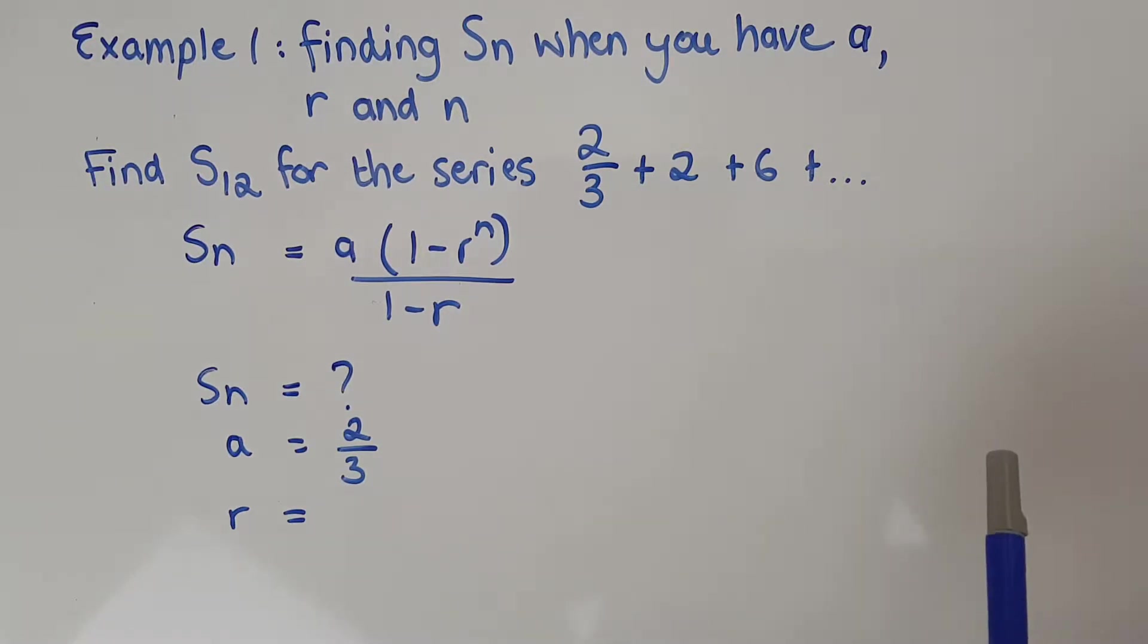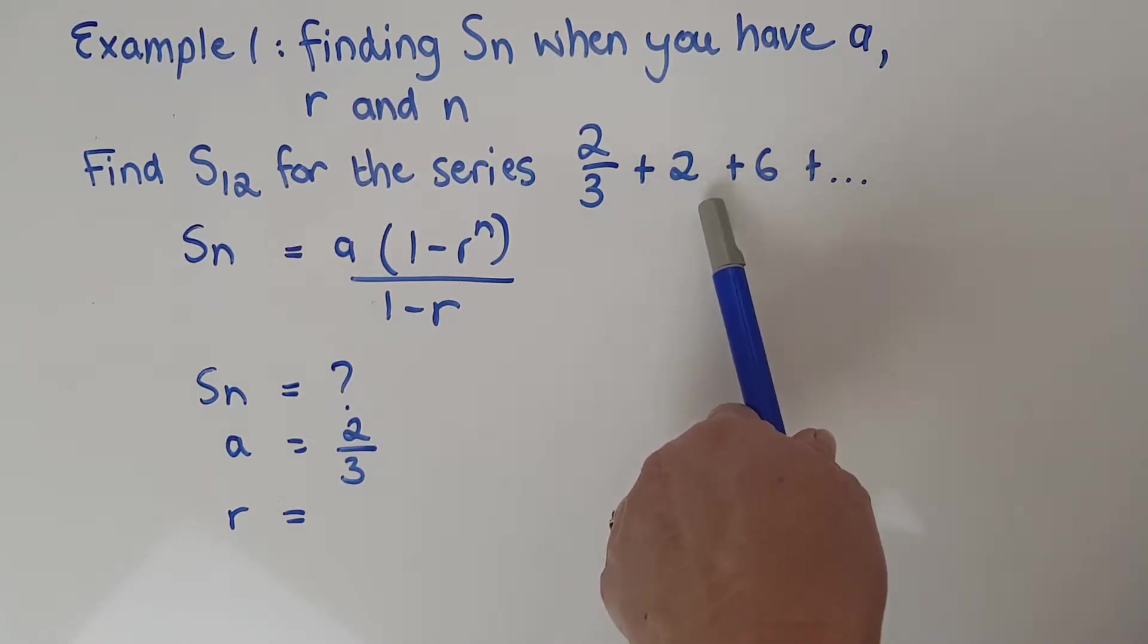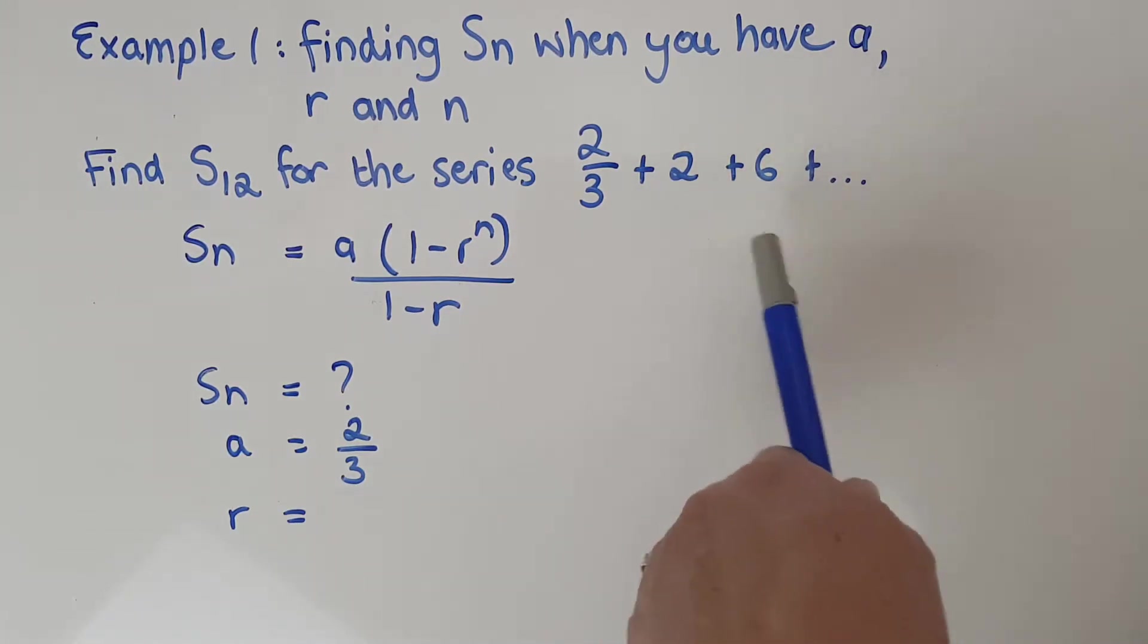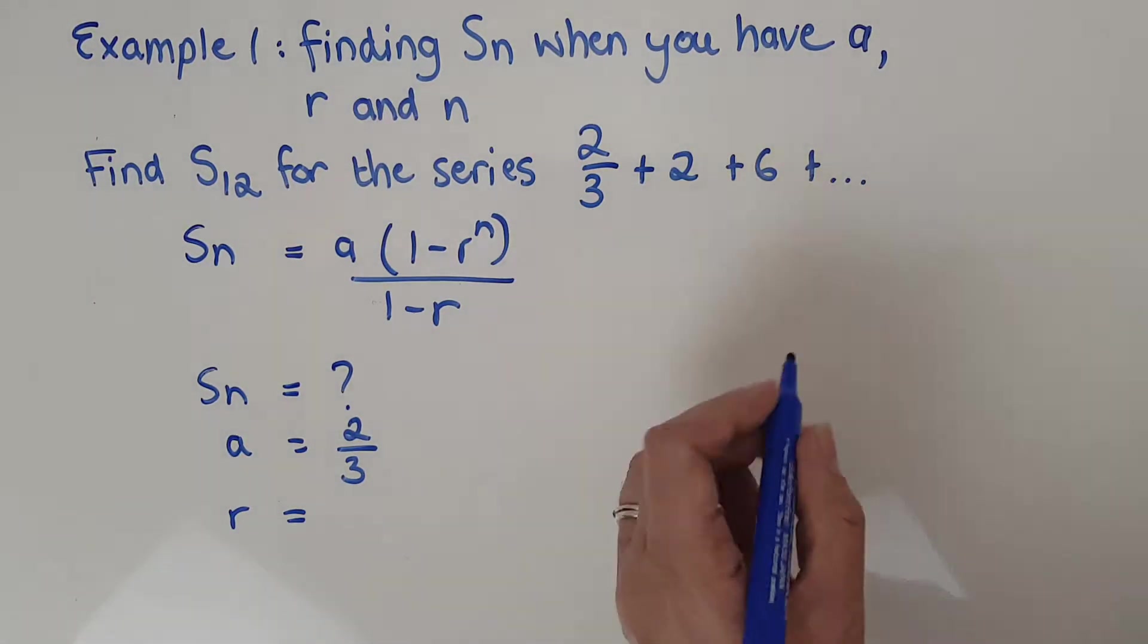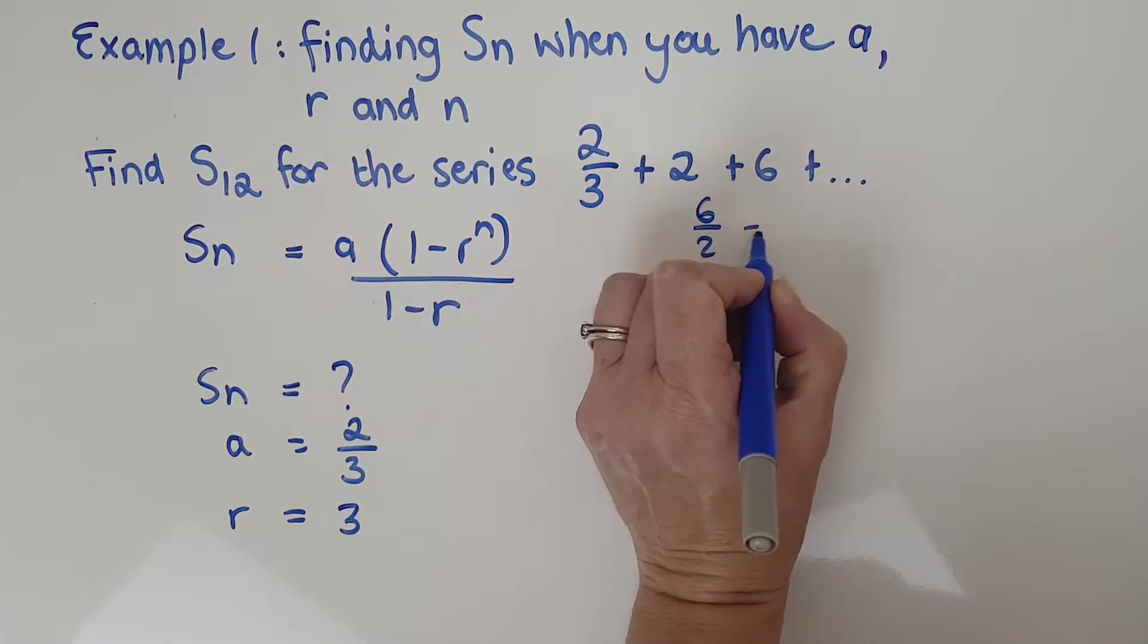So I'm going to then find my r by taking 2 divided by 2 thirds, and 6 divided by 2. In fact, this one's easier. So I know straight away that r is 3. So I'm going to put that down over there, r is 3, because I just checked 6 over 2 equals 3.